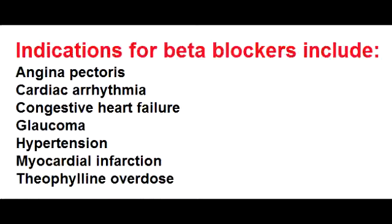What are the clinical uses of beta blockers? Beta blockers can be used in angina pectoris, myocardial infarction, supraventricular tachycardia, hypertension, congestive heart failure, and glaucoma.